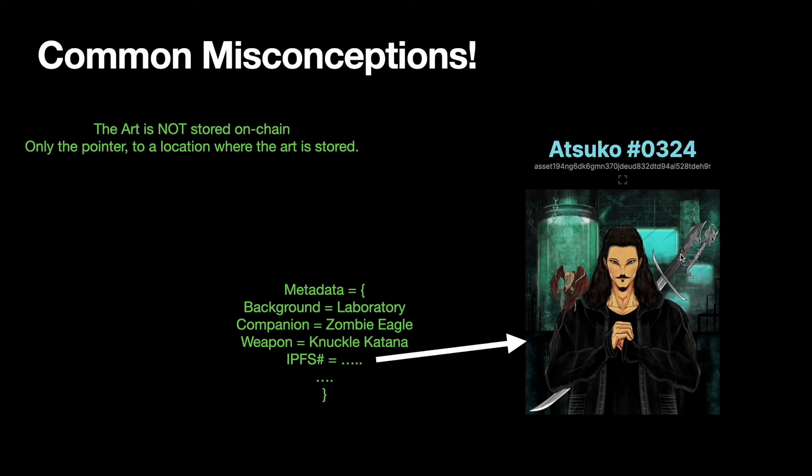So in effect you have a fixed bit of data on the blockchain which can't be forged or edited ever, and that points to a real asset — so you get the security whilst ensuring that the blockchain remains lightweight.